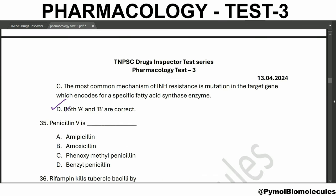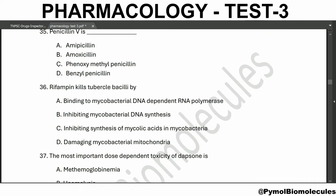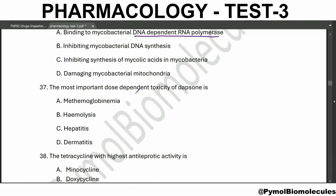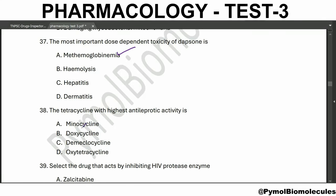The sensitive mycobacteria generates an active metabolite of INH through a catalase-peroxidase enzyme - so both A and B are correct. Penicillin V is phenoxymethyl penicillin. Rifampin kills the tubercle bacteria by DNA-dependent RNA polymerase inhibition. The most important dose-dependent toxicity of dapsone is methemoglobinemia.